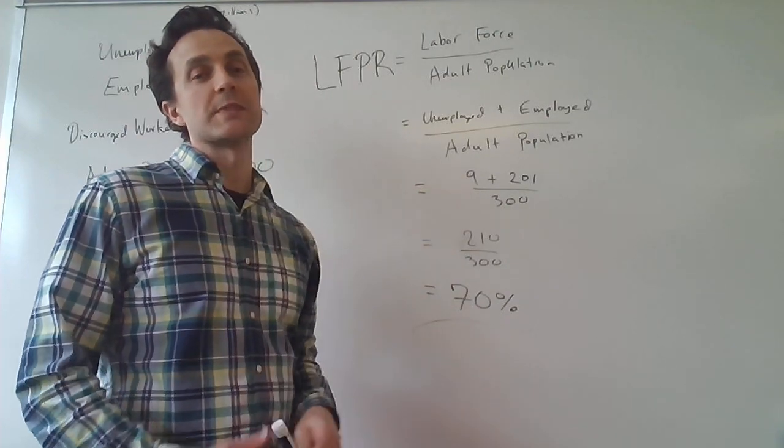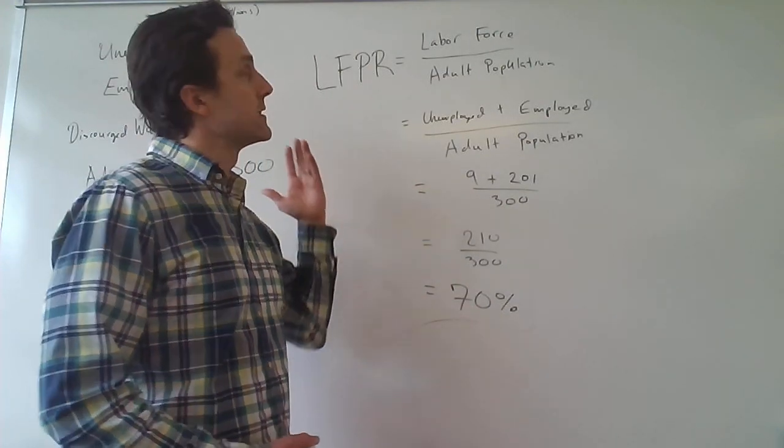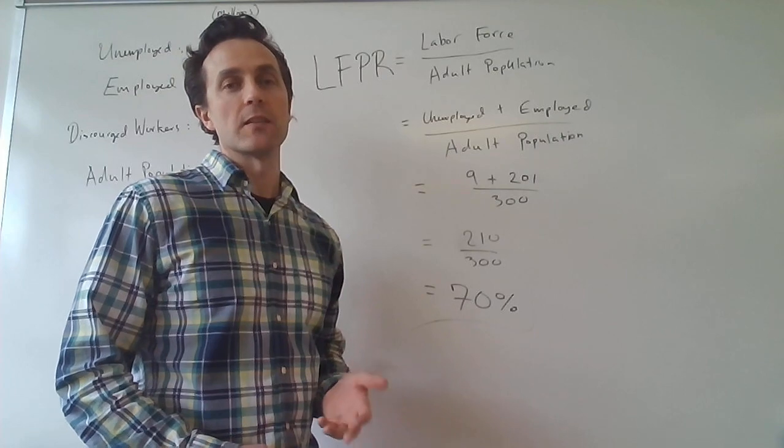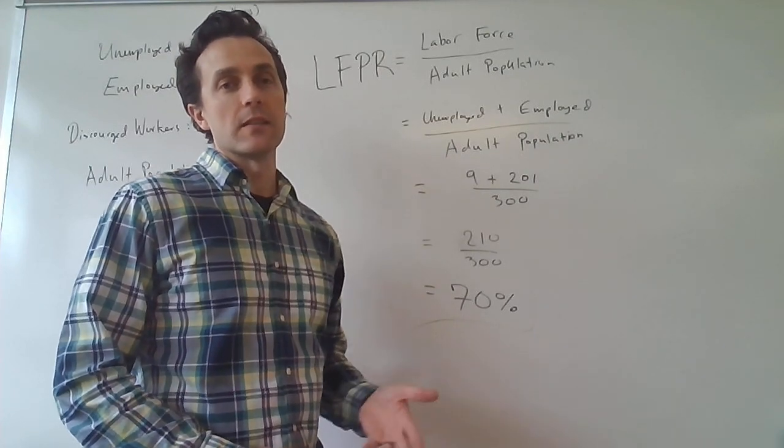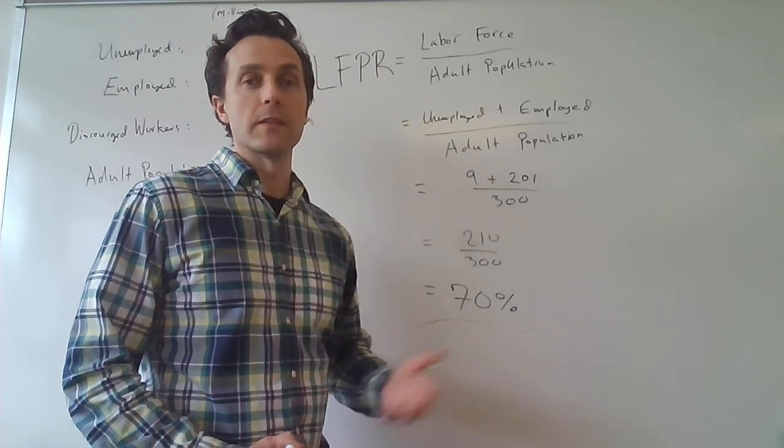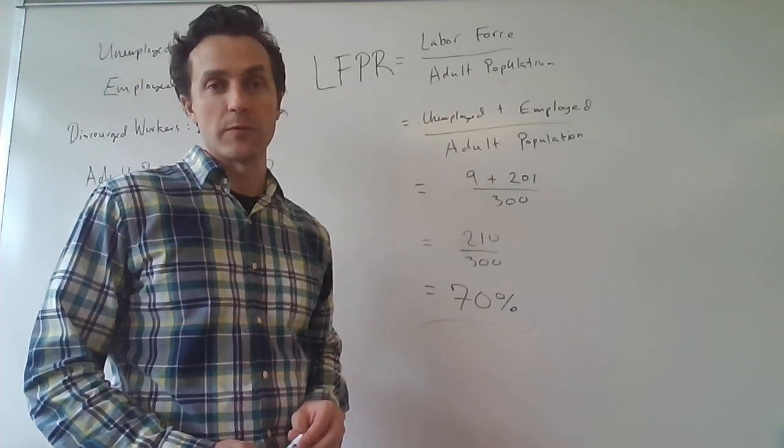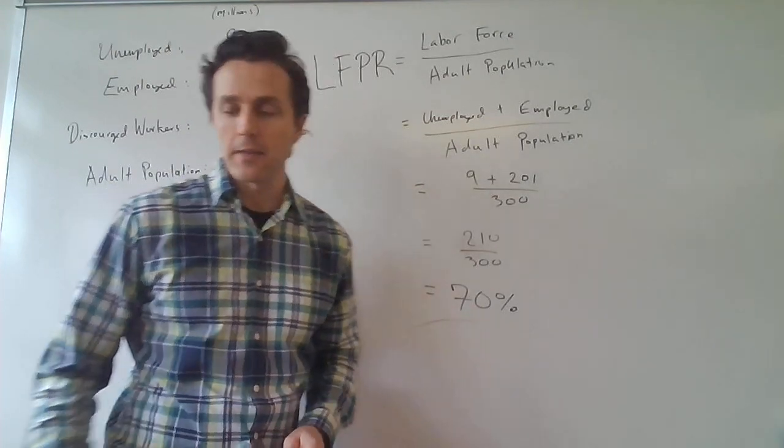So in this economy, the labor force participation rate would be 70%. 70% of the adult population is either unemployed or employed, they're involved and part of the labor force. Thank you for watching.